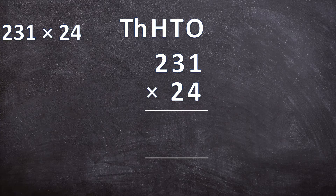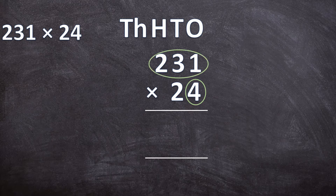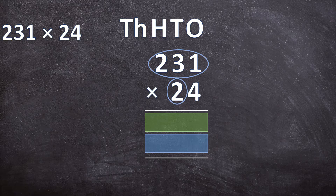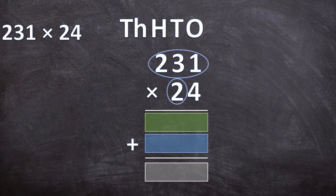When we start, we take the bottom number — in this case 24 — and we split that number. We are separately going to multiply with 4 and with 20. First, multiply the 4 with 231 and write that answer directly underneath the line. Next, multiply the 20 with 231 and write that answer directly below the first. Then all you have to do is add those two answers together to get your final answer.